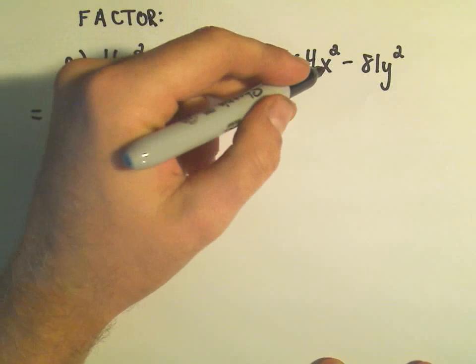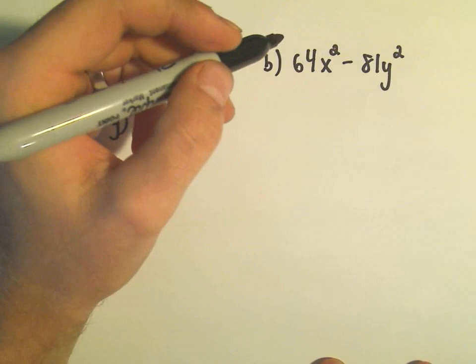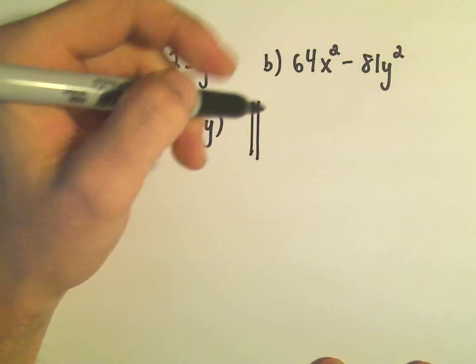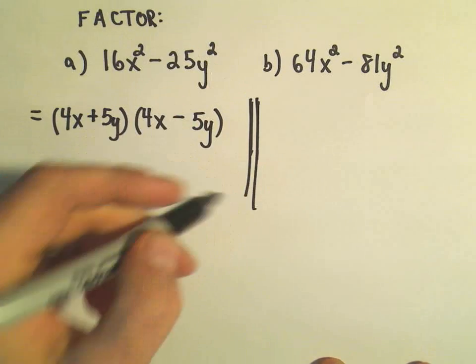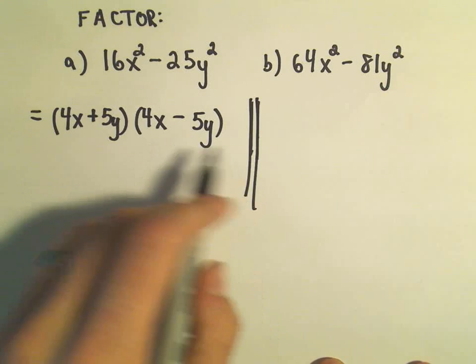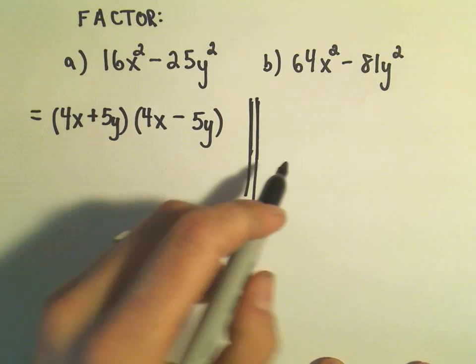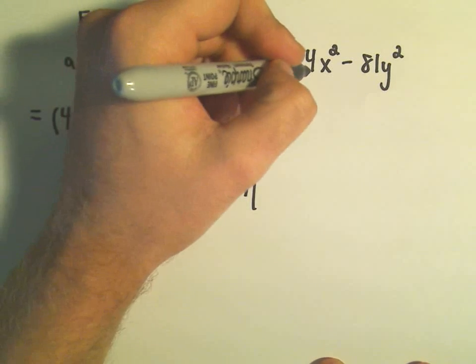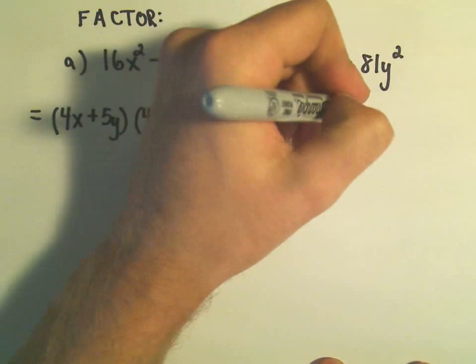So let's do our other example here: 64x squared minus 81y squared. I'm just trying to make a little barrier here to separate them. So I'm going to make my two sets of parentheses.